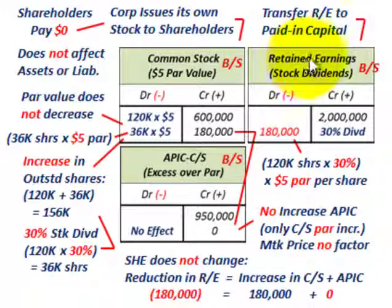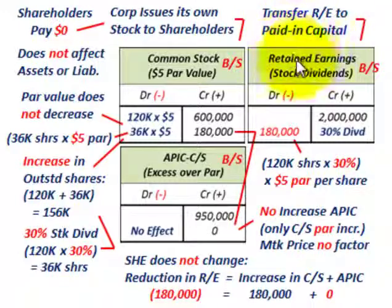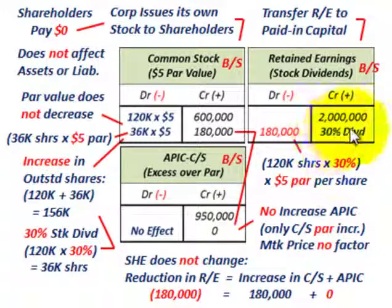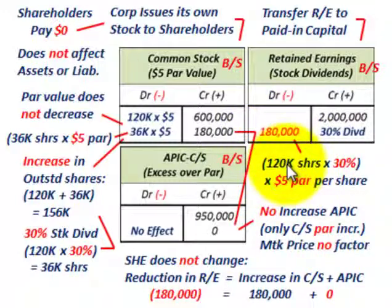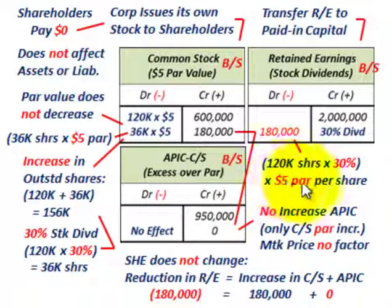We have our retained earnings account, our common stock par account, and additional paid-in capital to common stock. We need to transfer retained earnings — the earned capital — to the paid-in capital account for common stock. Retained earnings has a credit balance of $2 million. The 30% stock dividend equates to $180,000, so we debit retained earnings for $180,000. That's based on 36,000 shares times the $5 par value per share.